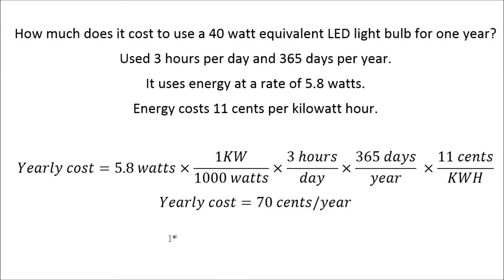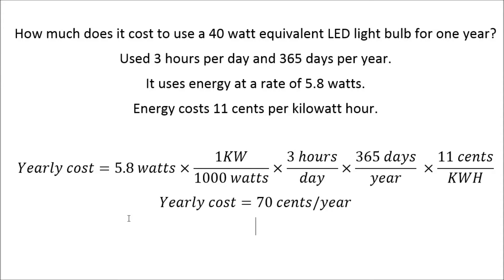If you compare that to the incandescent bulb, which is 40 watts rather than 5.8 watts, if you take that ratio — 40 over 5.8 times 70 cents — you get $4.83 as the cost for the incandescent. Big difference. The fact that the bulb lasts much longer adds to your savings, and you're lowering your carbon footprint by using these bulbs. Over a 20 year period that the LED lasts, you'd probably have to buy at least 10 incandescent bulbs.